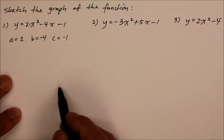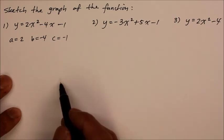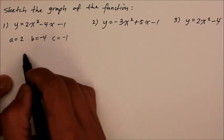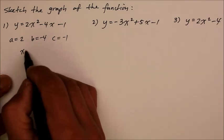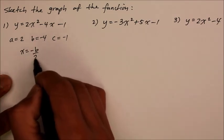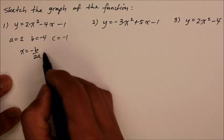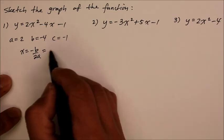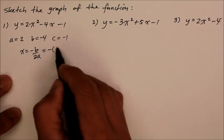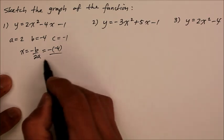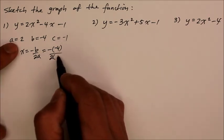In order to find the vertex, you have to find the middle of the parabola, the axis of symmetry. Sometimes we call it line of symmetry, and the formula for that is x equals negative b over 2a. So we're going to substitute in the coefficients, negative times the negative b which is negative 4, over 2 times a which is 2.